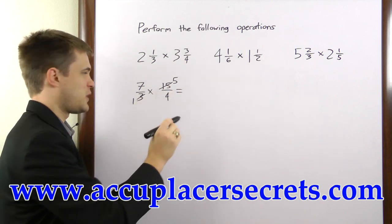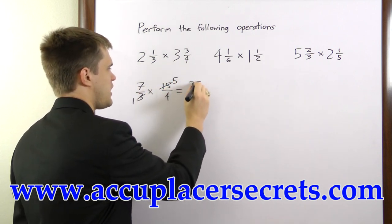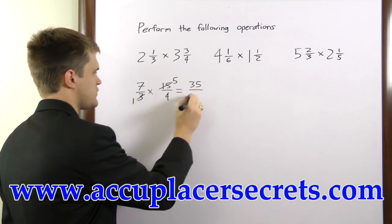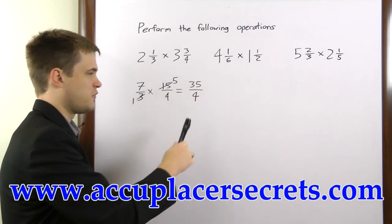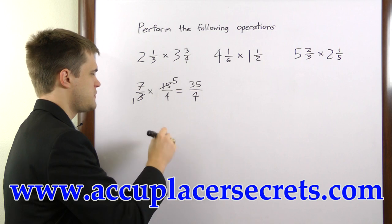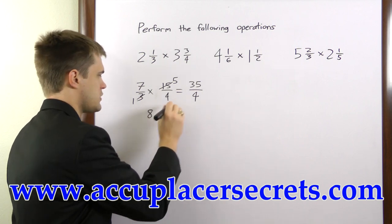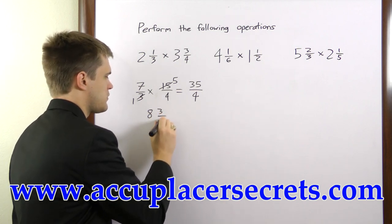Now, we can multiply. 7 times 5 is 35. 1 times 4 is 4. Now, 4 goes into 35 8 times, with a remainder of 3, so our answer is 8 and 3/4.